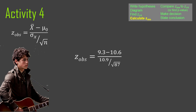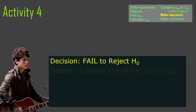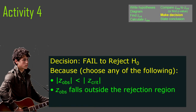Calculating z-observed by plugging values into the formula, we find negative 1.11. That's not good — it needed to be outside the range of negative 1.96 to positive 1.96 to reject the null. The p-value, which is the area below this z-observed and above its mirror image on the other side of the distribution, is about 0.27 — much larger than alpha. We fail to reject the null hypothesis. Z-observed falls outside the rejection region, or equivalently, p is greater than alpha.